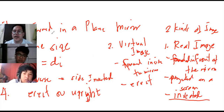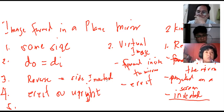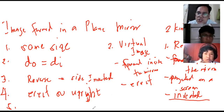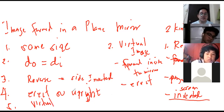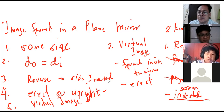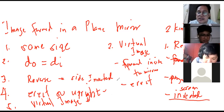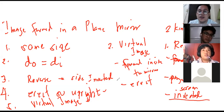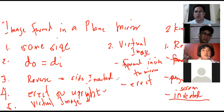Therefore, what kind of image is formed in a plain mirror? A virtual image — correct. It is a virtual image because you see it inside the mirror, and of course it is erect and upright. So to summarize: the image formed in a plain mirror is the same size, the object distance equals image distance, it is always laterally inverted, always erect and upright, and it is a virtual image.